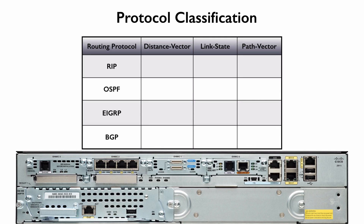A link state routing protocol, however, does have a map of the terrain. It works much like a car's navigation system. If I'm trying to go from my hometown to Cisco headquarters in San Jose, California, I could put the destination into my navigation system, and it would know the different roads I could take. It gives a lower cost to interstates and a higher cost to back roads. By seeing the entire map and alternate paths, it can run an algorithm — literally, your car's navigation system runs the Dijkstra shortest path first algorithm, just like OSPF — to make that routing decision.